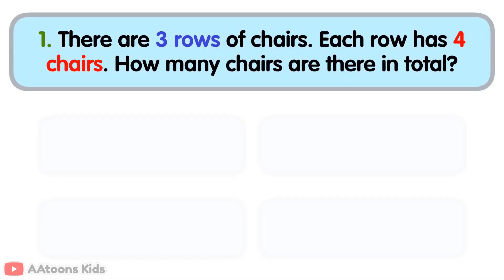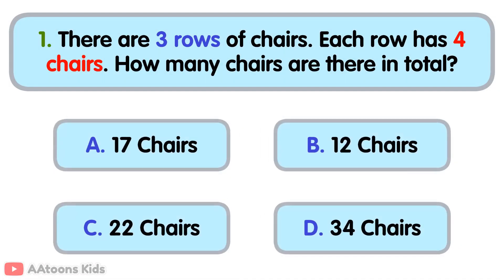There are three rows of chairs. Each row had four chairs. How many chairs are there in total?